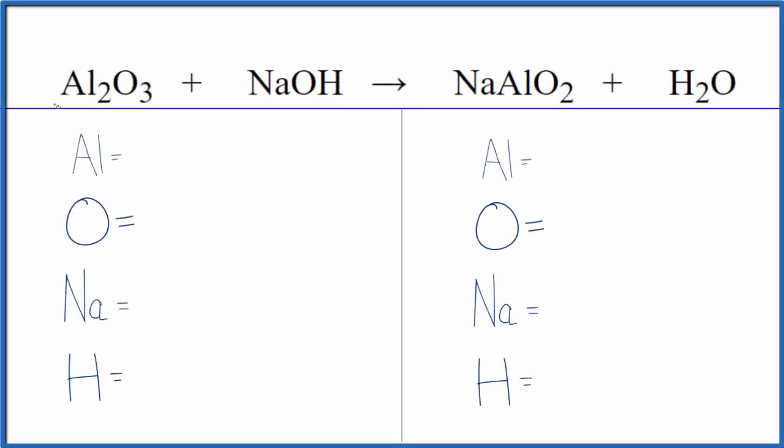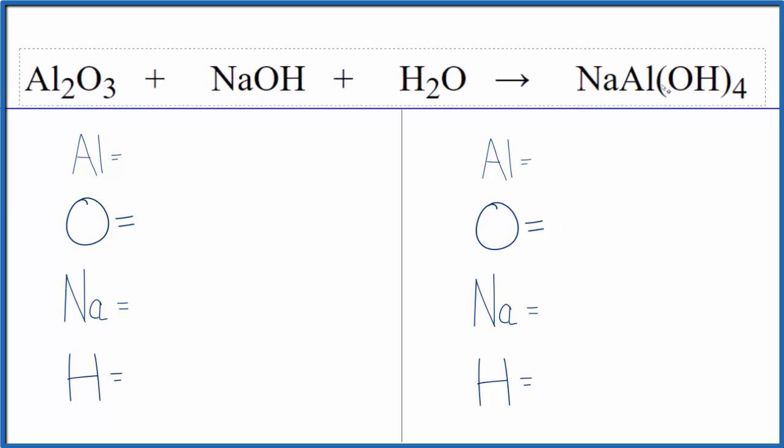In this video we're going to balance the equation for Al2O3 plus NaOH, aluminum oxide plus sodium hydroxide. The products for this reaction, often you'll see this reaction written like this where we end up with NaAlO2 plus H2O. If you need to balance that equation there's a link in the description on how to balance this particular equation.